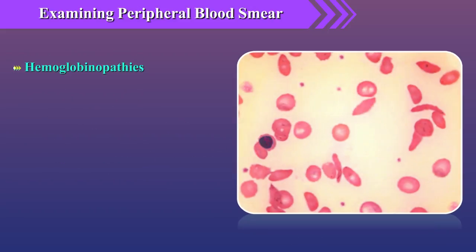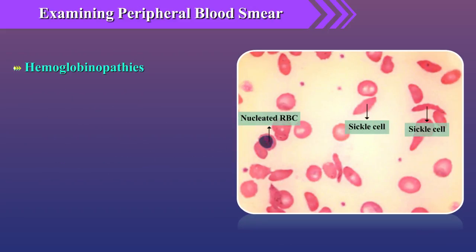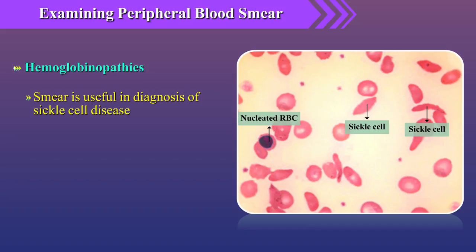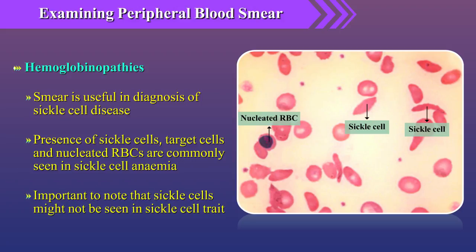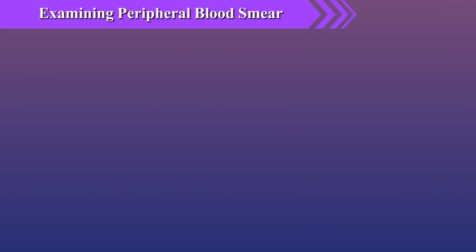In hemoglobinopathies, the smear is useful in diagnosis of sickle cell disease, particularly when there is an urgent need for diagnosis and HPLC results are not instantly available. Presence of sickle cells, target cells, and nucleated red blood cells are commonly seen in sickle cell anemia. However, it is important to note that sickle cells might not be seen in sickle cell trait.